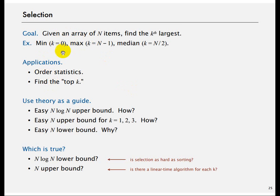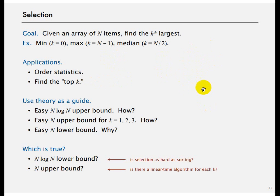Selection is the idea that you can use Quicksort partitioning to find the kth largest element. For example, in an array of 20 elements, you want the 10th largest. You pick a pivot and find its correct position. If it lands at position 10, that is your answer. If it lands at 5, you look at the right portion; if it lands at 15, you look at the left portion.